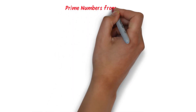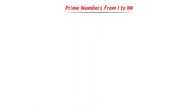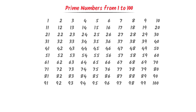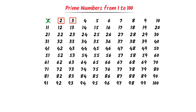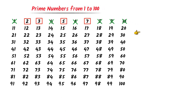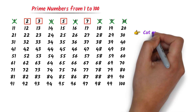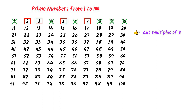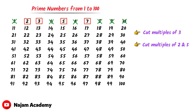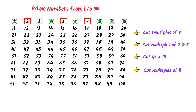Now let me teach you prime numbers from 1 to 100 using my personal trick. I write numbers from 1 to 100. We already know that 1 is not a prime number. 2, 3, 5, and 7 are prime numbers, while 4, 6, 8, 9, and 10 are not. I follow 4 steps: Step 1 — cut the multiples of 3. Step 2 — cut the multiples of 2 and 5. Step 3 — cut 49 and 91. Step 4 — cut the multiples of 11 diagonally.